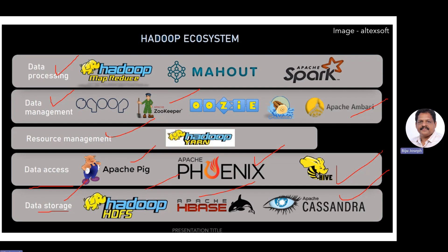Then we have the data processing layer. Huge data will be processed using a simple programming model called Hadoop MapReduce, along with Mahout and Apache Spark. So when you hear about the Hadoop ecosystem, think about data storage, data access, resource management, data management and data processing, with a couple of applications supporting each.